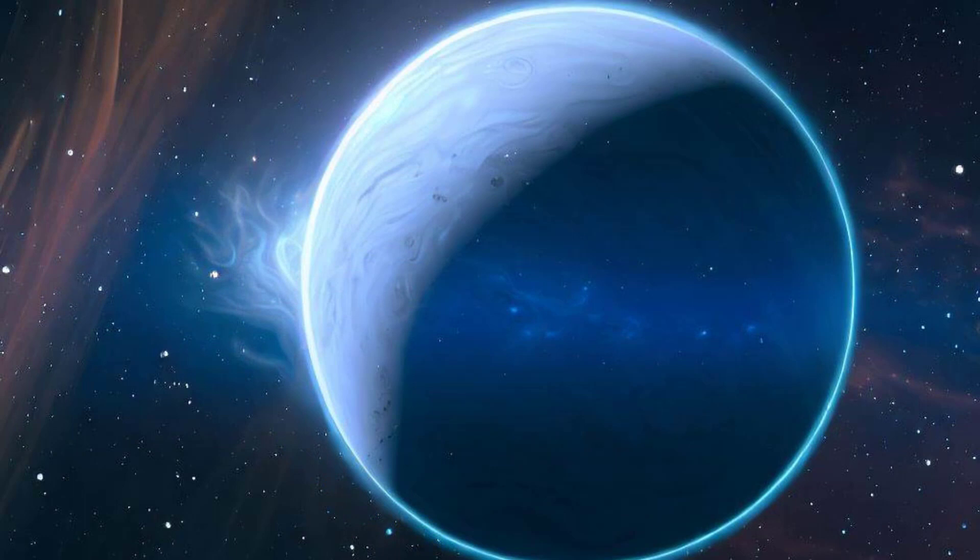Neptune is the eighth and farthest known planet from the Sun in our solar system. It has a thick atmosphere made mostly of hydrogen and helium. It has at least 14 moons, including one large one called Triton, that orbits in the opposite direction to most other moons. It also has a faint ring system and a powerful storm system called the Great Dark Spot.